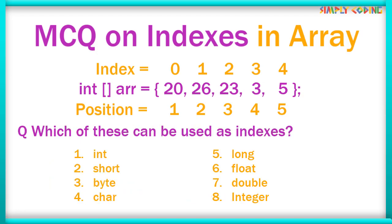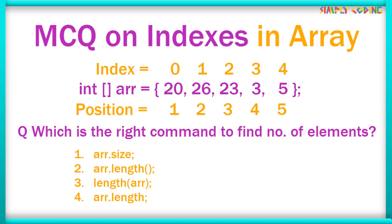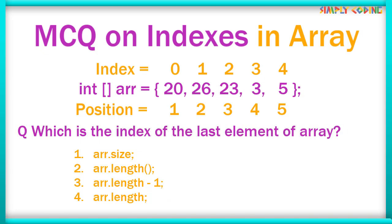What data types can be used as an index? Int, short, byte, or char are all valid. You cannot use long, float, or double as index values. Can we use Integer? Yes, the Integer wrapper class can also be used. To find the number of elements in an array, since array is an object you use the length member variable — it is not a function. The index of the last element is arr.length - 1.